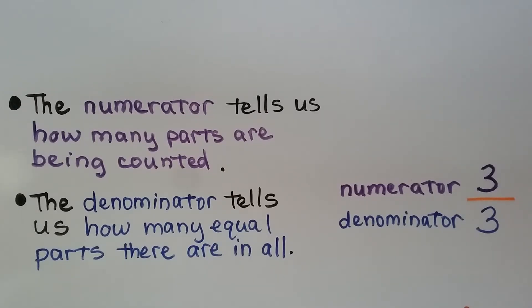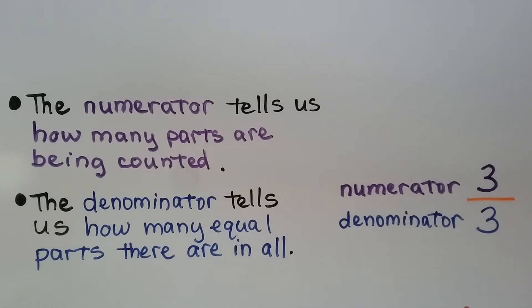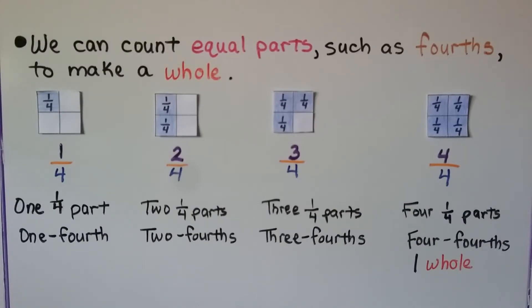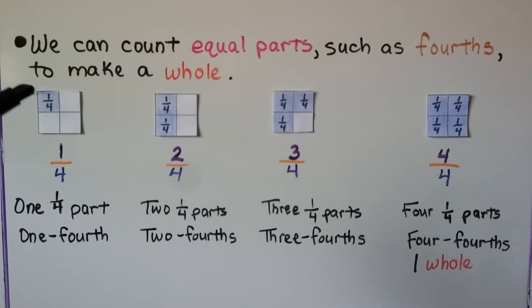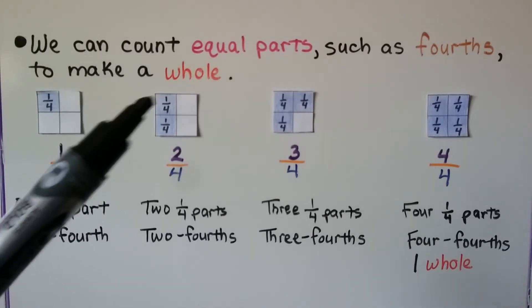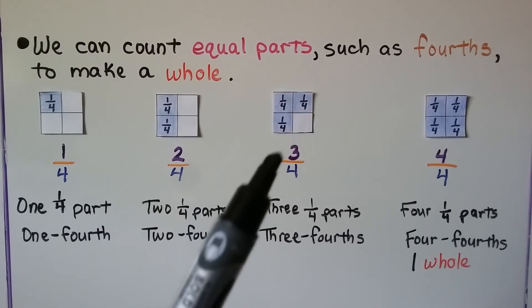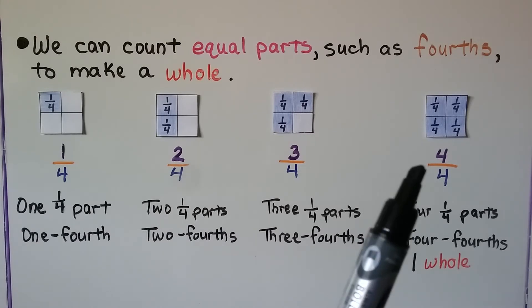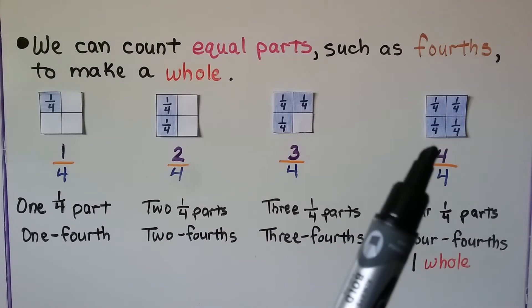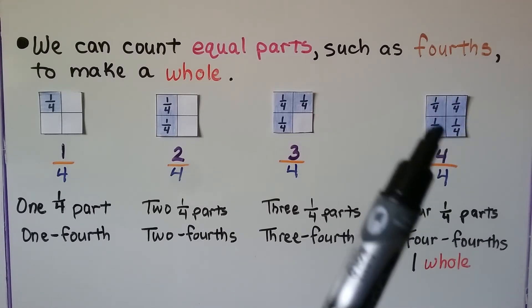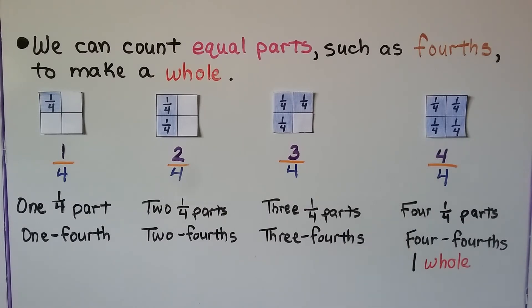The numerator tells us how many parts are being counted. The denominator tells us how many equal parts there are in all. The numerator is on the top; the denominator is on the bottom. We can count equal parts, such as fourths, to make a whole. One one-fourth part gives us one-fourth. Two one-fourth parts give us two-fourths. Three one-fourth parts give us three-fourths. And four one-fourth parts give us four-fourths, which is one whole — all four parts out of four are shaded.